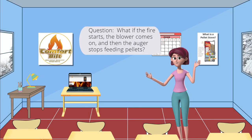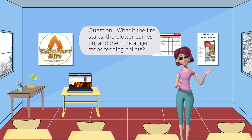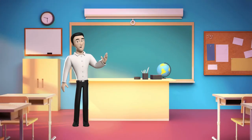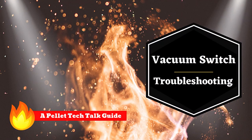What if the fire starts, the blower comes on, and then the auger stops feeding pellets? That usually indicates that there may be a vacuum switch fault. See our vacuum switch troubleshooting guide for more in-depth information.